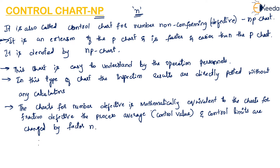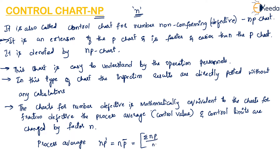The process average for the NP chart can be written as NP-prime, which equals NP-bar — the fraction defective — which equals the sum of NP divided by M, that is the number of samples.